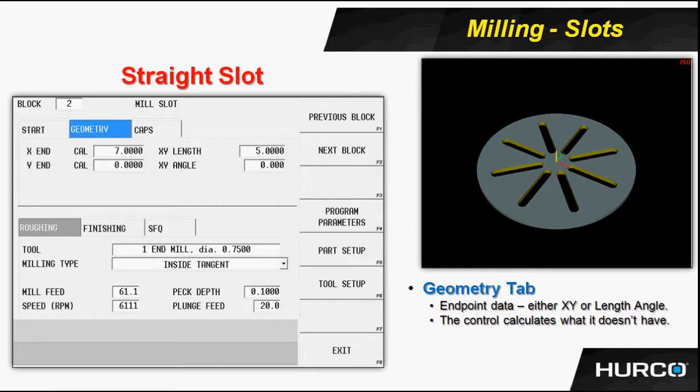Next, we want to select the geometry tab. On the geometry tab, we're putting in the end point of the slot. Remember, we are programming just the center of the slot and its length. So here we could either put in the X, Y value of the slot, or in the case of what we did here, we knew that it was a 5 inch long slot, and that it ran from the starting point to the end point in the 0 degree direction as it applies to the Hercule compass. So we put that information in. The tooling information at the bottom hasn't changed.